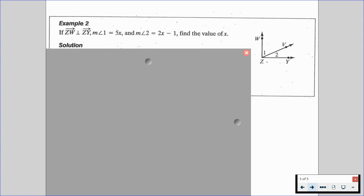There's a lot being thrown out here, but the first thing that we want to identify is that ray ZW is perpendicular to ray ZY. So we have complementary angles. Angle 1 and angle 2 are going to be complementary to each other because we have a right angle being formed.